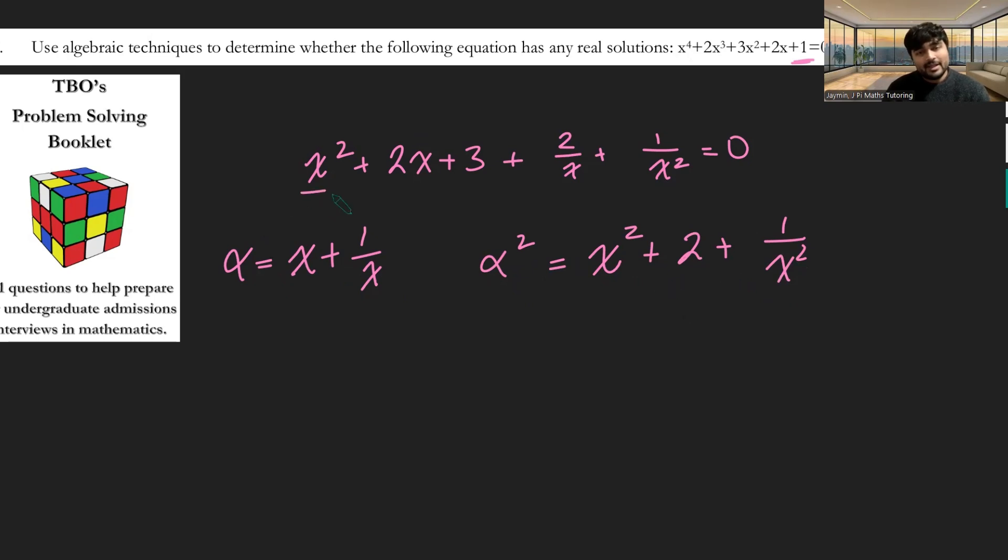This is really nice because we've got an x squared plus 1 over x squared here, and we've got 2x plus 2 over x here. So we can write this equation purely in terms of alpha. The x squared plus 1 over x squared is just going to be alpha squared minus 2, and then 2x plus 2 over x is going to be plus 2 alpha. So this equation actually just boils down to being a quadratic in terms of alpha. We get alpha squared plus 2 alpha plus 1 equals 0.